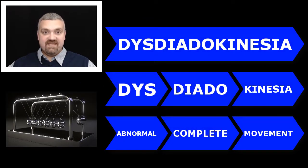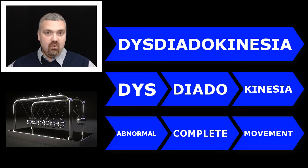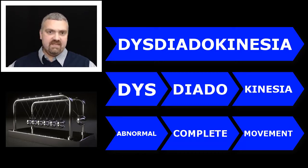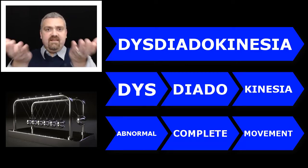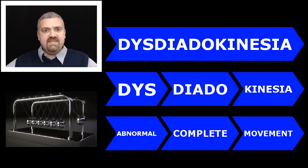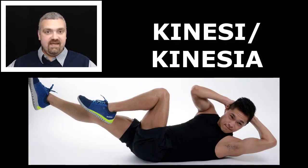Next we have an interesting one: dysdiadochokinesia. Dis means painful or abnormal, dia means complete — so this is saying an abnormal ability to complete a movement. Dysdiadochokinesia is a problem with the cerebellum where you can't complete rapid alternating movements. A simple test is rapidly alternating pronating and supinating your forearms. So dysdiadochokinesia means abnormal or inability to complete normal movements.